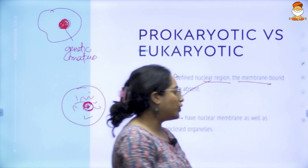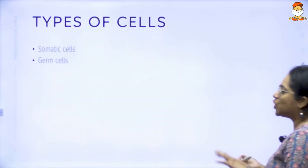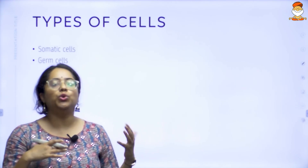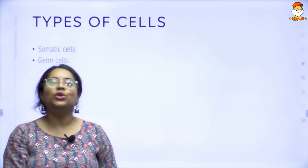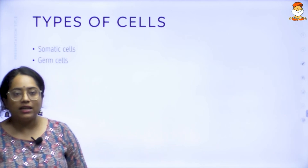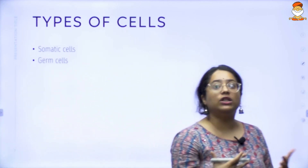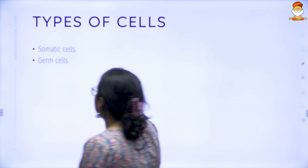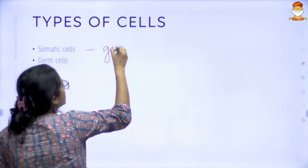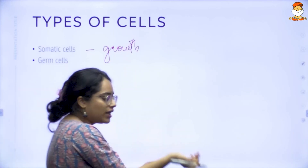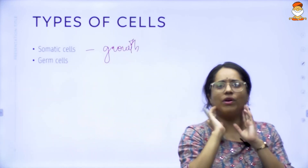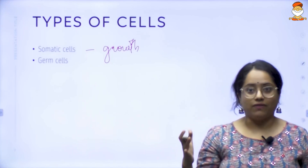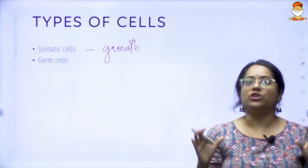We need to cover one more important distinction. There are primarily two types of cells. If you take your body right now, almost all the growth cells of your body are together called somatic cells. Growth cells are anything — your skin, any part of your body — cells which are rapidly dividing.